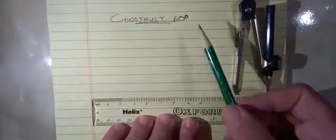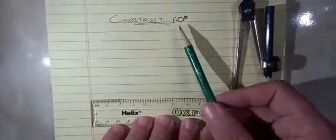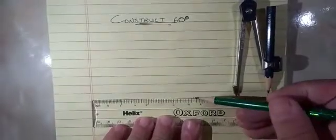We're going to be constructing a 60-degree angle. We start with drawing a baseline of any length and label a point on that line. You can label the point anywhere on the line.